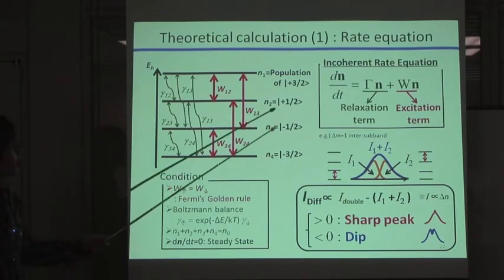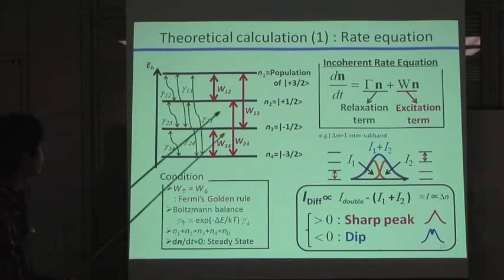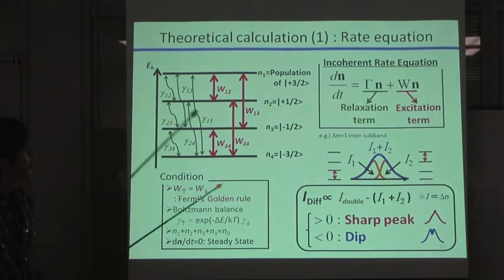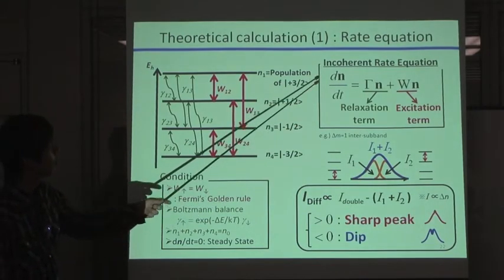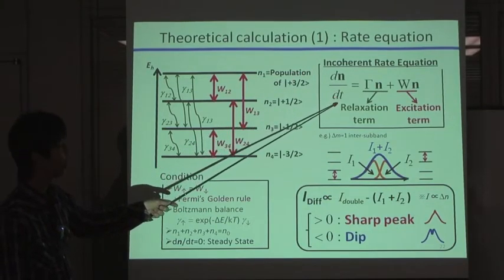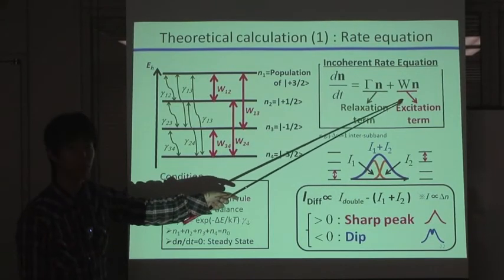We have developed an incoherent rate equation like this, introducing all relaxation paths and all excitation paths. We assumed that the time evolution of population distribution can be expressed by the summation of relaxation term and excitation term.